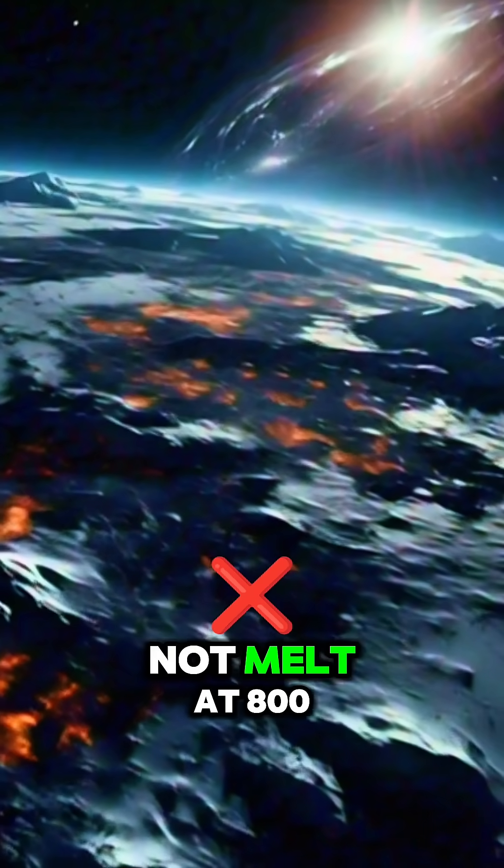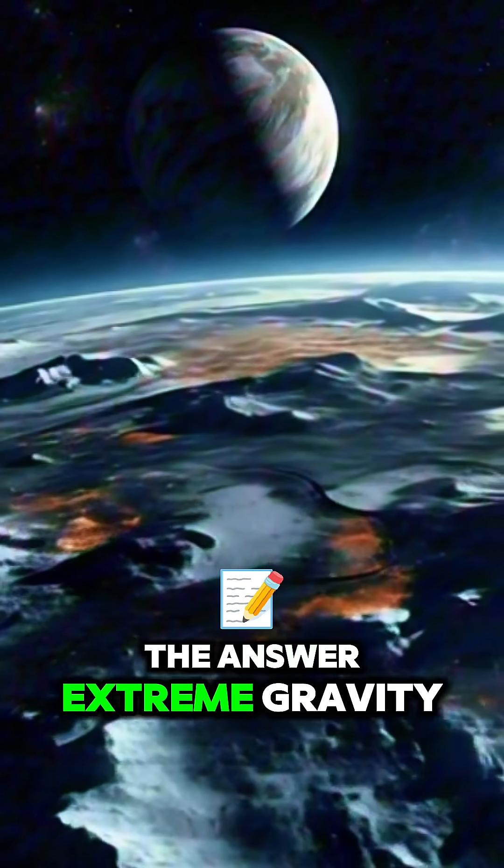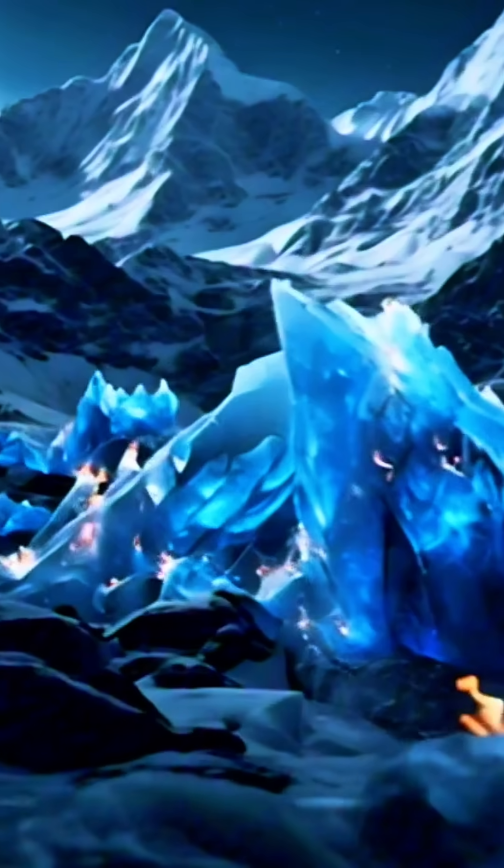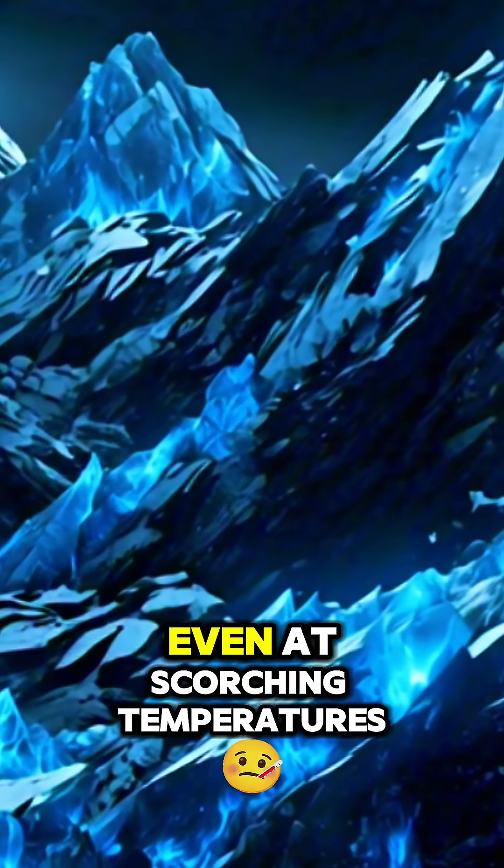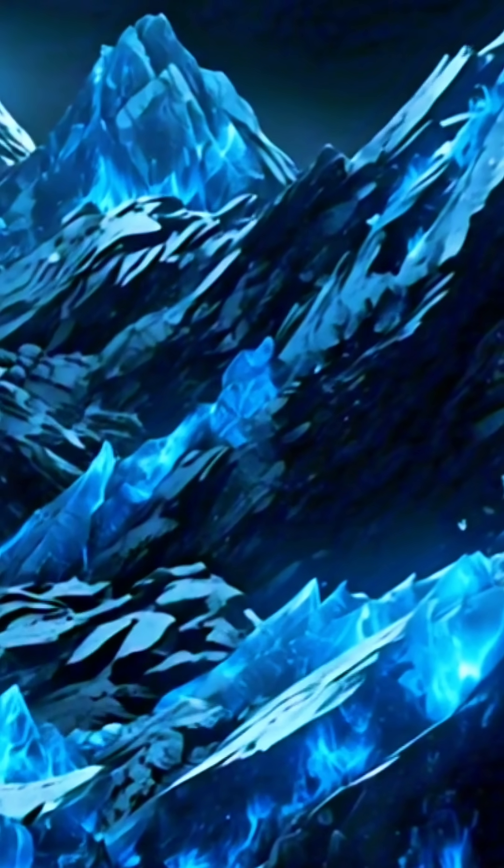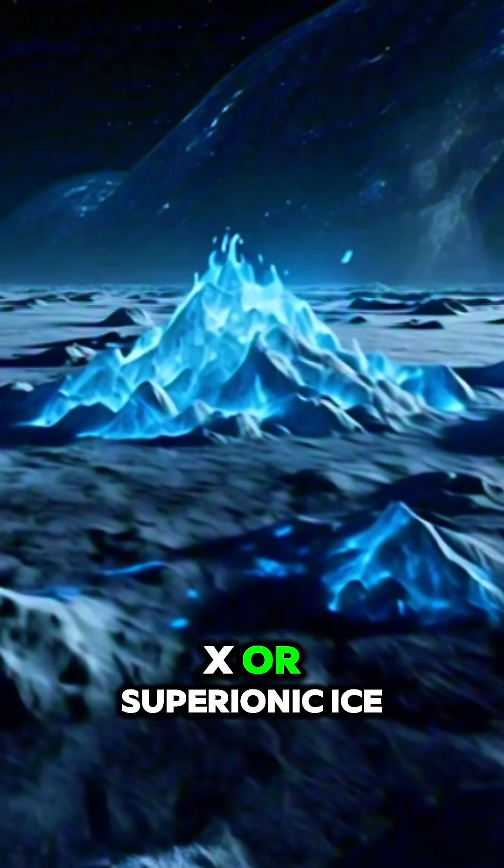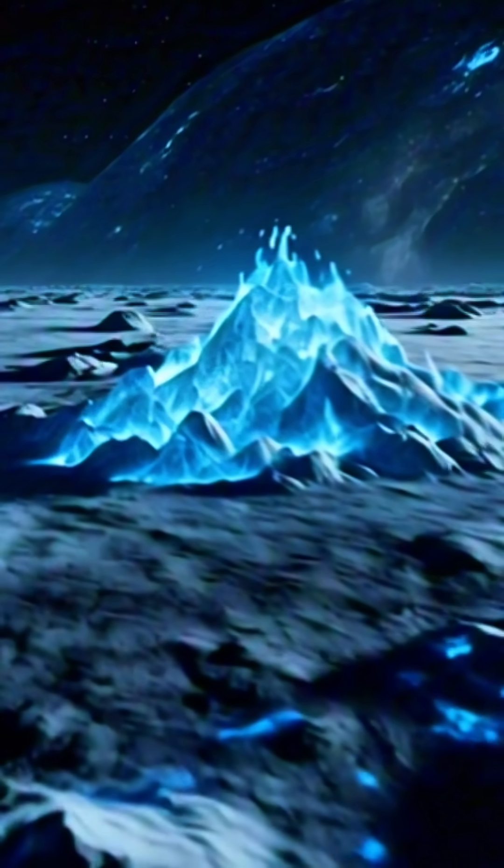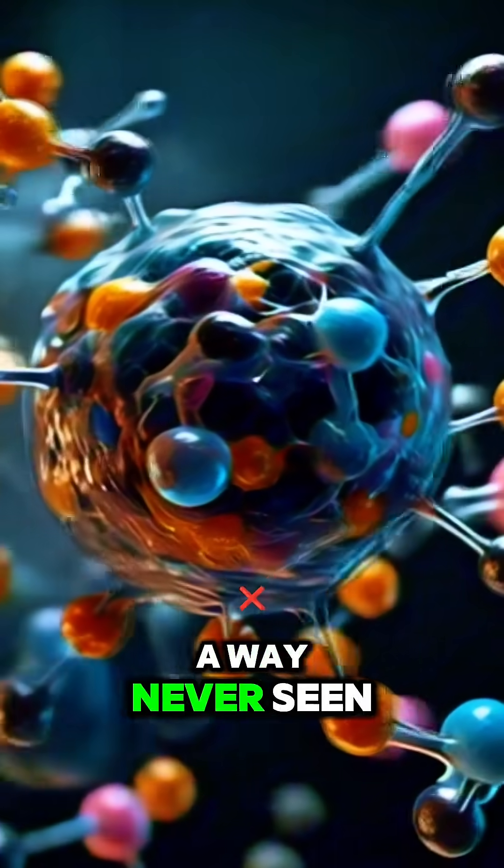So how does ice not melt at 800 degrees Fahrenheit? The answer? Extreme gravity. The planet's intense gravity squeezes the ice so tightly that it can't evaporate, even at scorching temperatures. Scientists call this strange form of ice Ice X, or superionic ice. The molecules are so compressed that they behave in a way never seen on Earth.